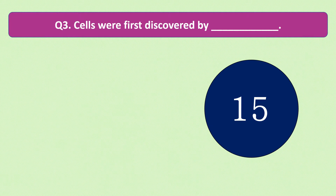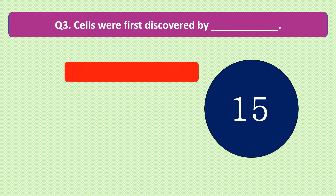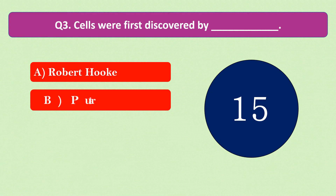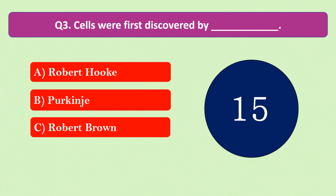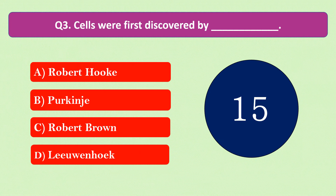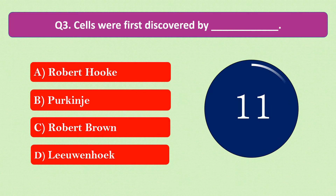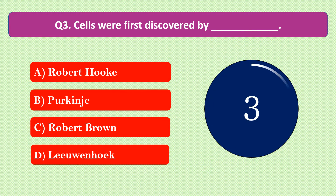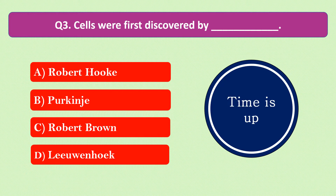Question number 3: Cells were first discovered by dash. The options are A. Robert Hooke, B. Leeuwenhoek, C. Robert Brown, or D. Leeuwenhoek. Your time starts now. The right answer is option A: Robert Hooke. Cells were first discovered by Robert Hooke.